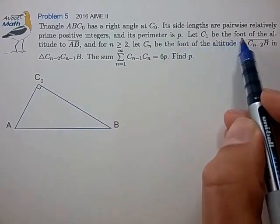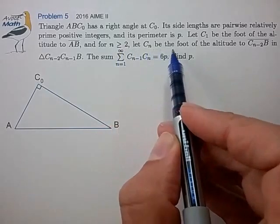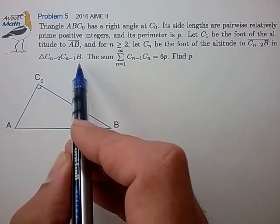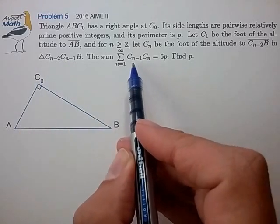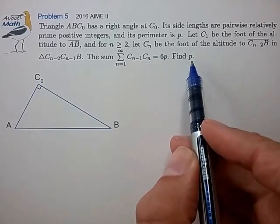Let C1 be the foot of the altitude to side AB, and for n greater than 2, let Cn be the foot of the altitude to Cn-2 B in this triangle, and let the sum of all these line segments equal 6 times the perimeter. Find the perimeter P.